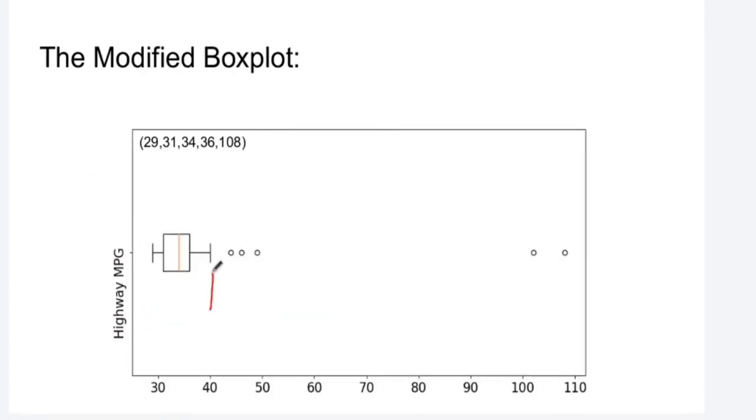So these whiskers now don't extend to the max and min. They extend to whichever is smaller of 1.5 times the IQR away from the median, or the minimum on the left, or similarly on the right, whatever is smaller, the 1.5 times the IQR, or the distance to the maximum.